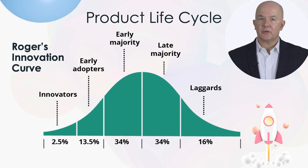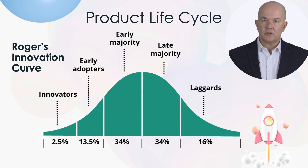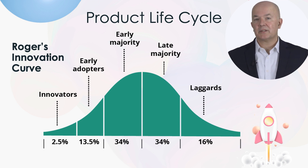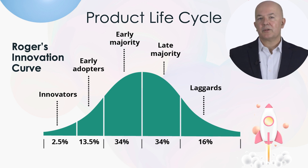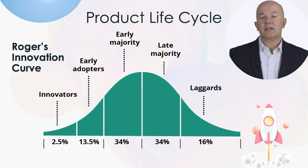Understanding the maturity of your market can be critical to developing your strategy. Roger's Curve of Innovation helps us to understand at what stage of the product life cycle you are at, and so helps inform us of which strategy is needed in order to succeed.